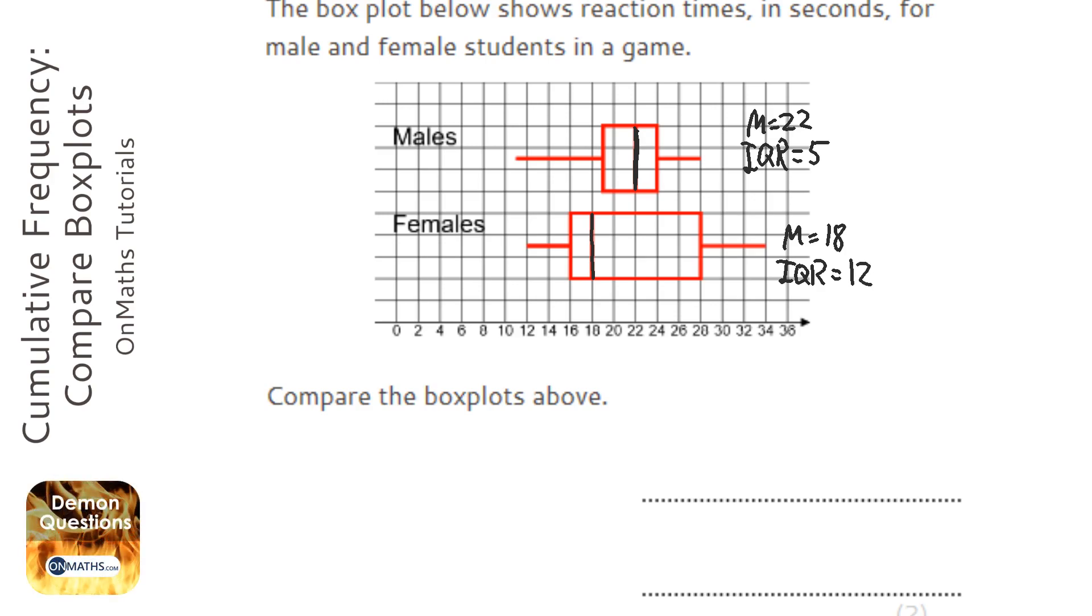So the first sentence you need to say is comparing the medians. We say something like, on average - I haven't even read the context of the question. Let's just read - so it's reaction times. On average,